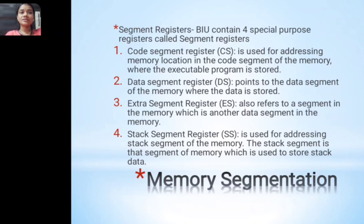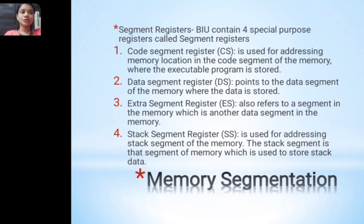For memory segmentation, there are four segment registers in the 8086 microprocessor. The first is the code segment (CS) register, used for addressing memory locations in the code segment where the executable program is stored. The data segment (DS) register points to the data segment of the memory.